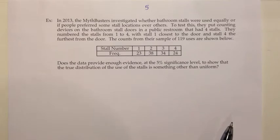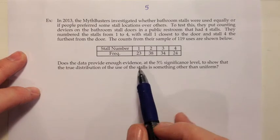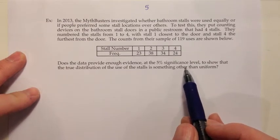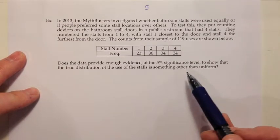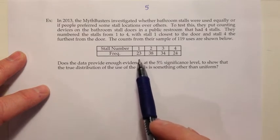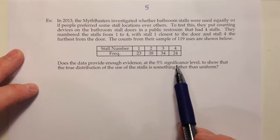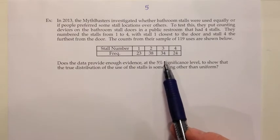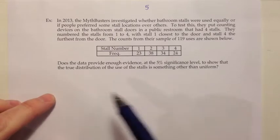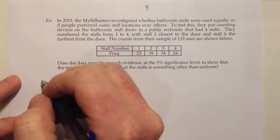Does the data provide enough evidence at the 5% significance level to show that the true distribution of the use of the stalls is something other than uniform? When they talk about significance level, I know that it's going to be a hypothesis test. It's a hypothesis test about the use of the stalls, and there's four different categories. When we're looking at how things are spread out over four categories, that sounds like a distribution type of question. And they even mention the true distribution. Those are all indications of a goodness-of-fit test.